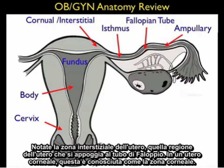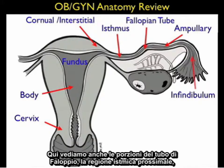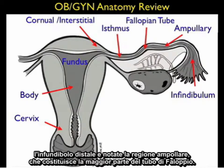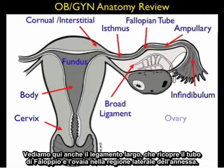In a corneal uterus, this is known as the corneal region. Here we also see the portions of the fallopian tube: the proximal ismal region, the distal infundibulum, and the ampullary region, which comprises the majority of the fallopian tube. We also see here the broad ligament, which encases the fallopian tube and ovary in the lateral region of the adnexa.